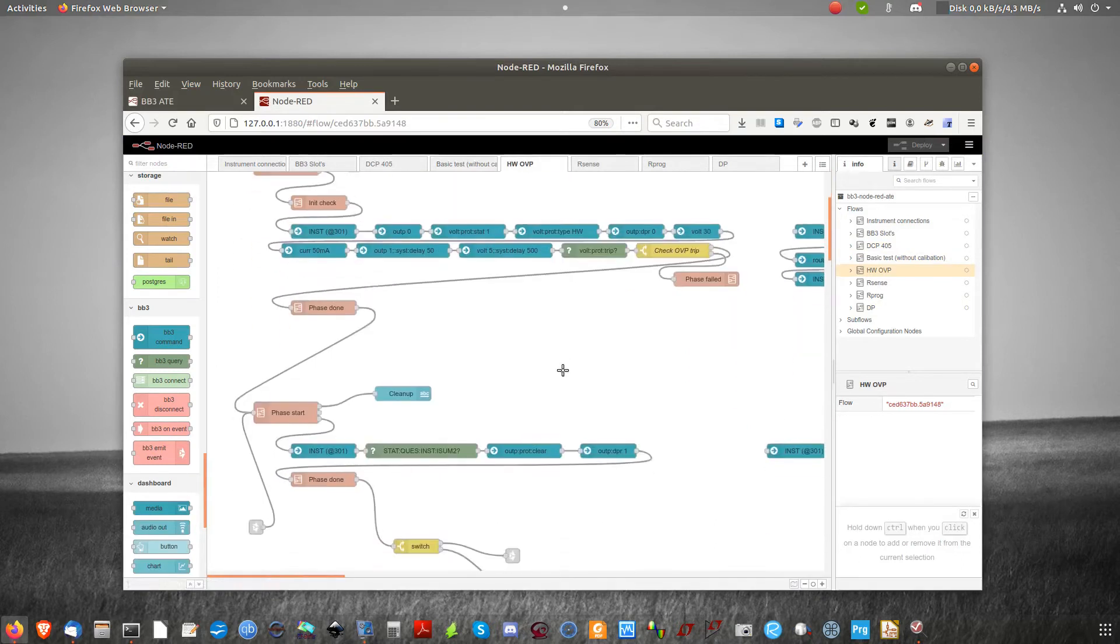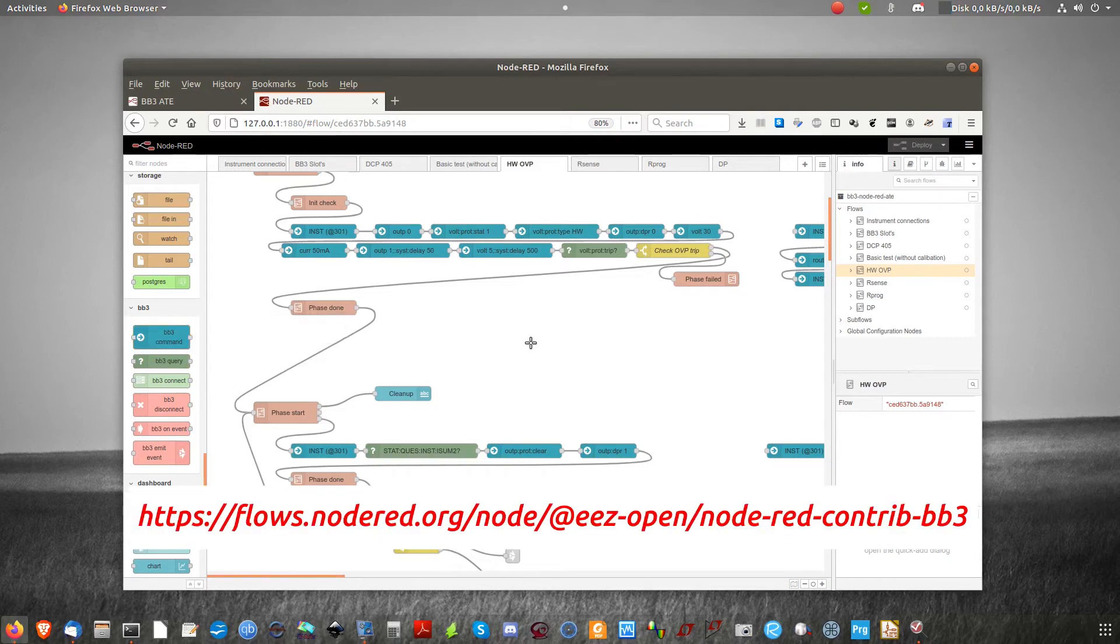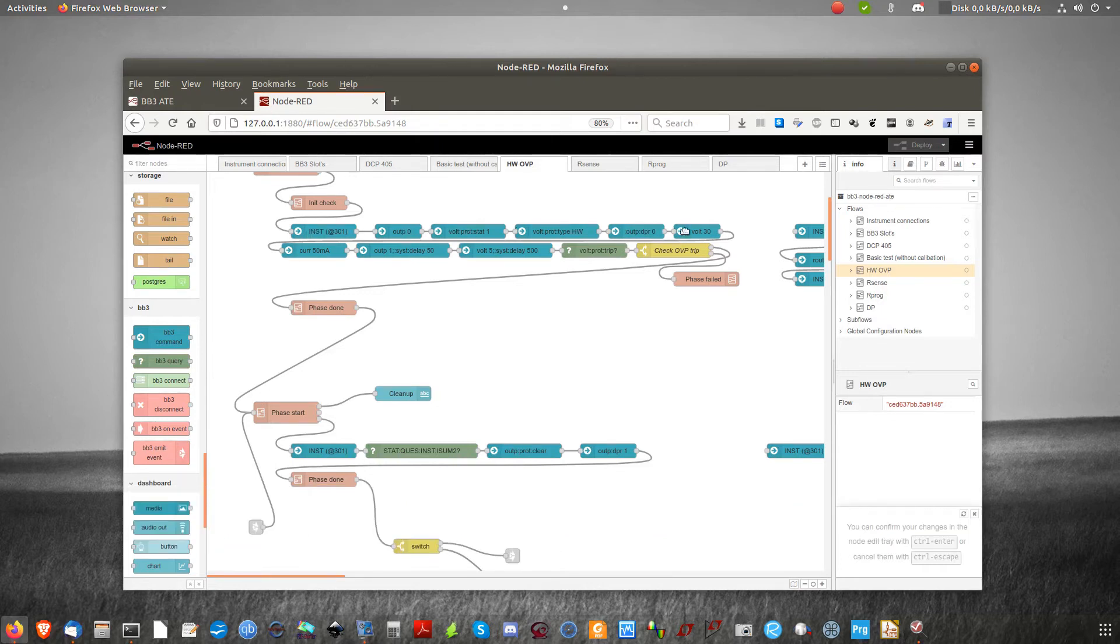which is generated with Node-RED flow. A complete test procedure is a collection of few flows. We can see that in the flow we are using some predefined nodes, but also our own BB3 nodes, which is a part of Node-RED integration. Here we can see that we are communicating with BB3 with a string of Skippy commands or with Skippy query.